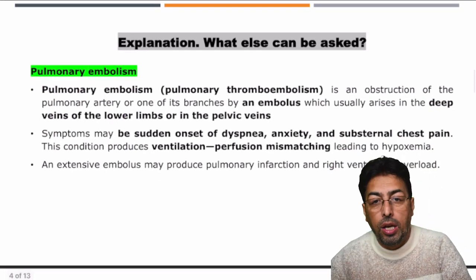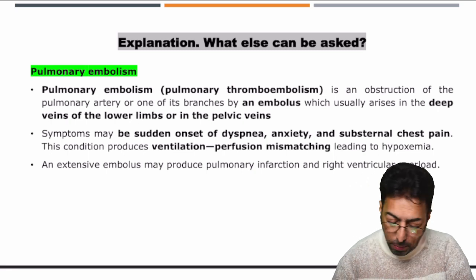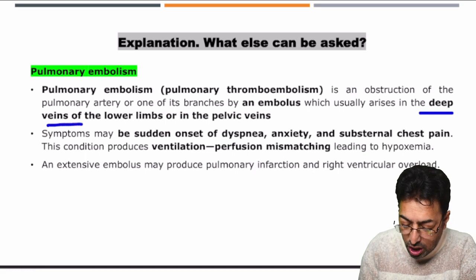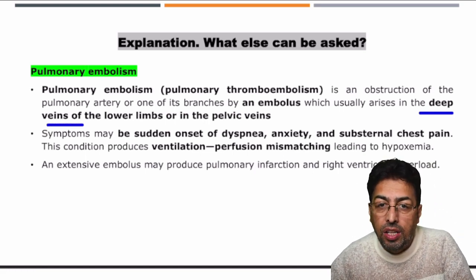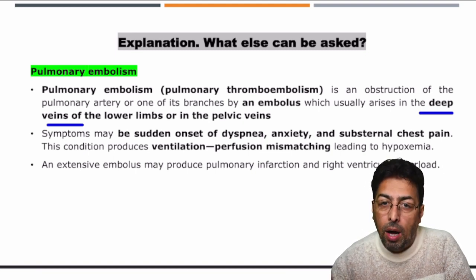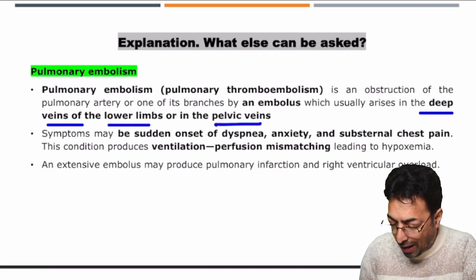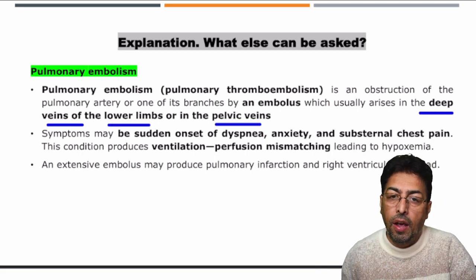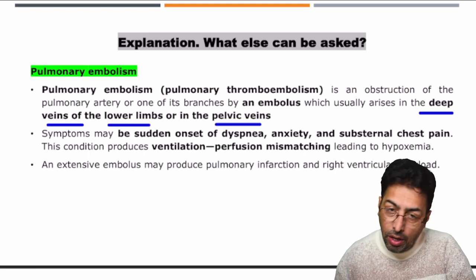As far as pulmonary embolism or pulmonary thromboembolism is concerned, it is usually the result of thrombosis in the deep veins, from where the thrombus is thrown into the upper part of the body. So deep vein thrombosis of the lower limbs and pelvic veins is the cause — DVT is a predisposing factor for pulmonary embolism.